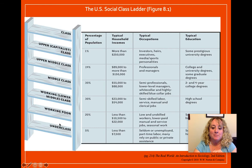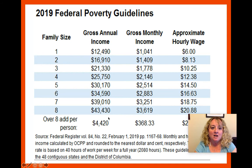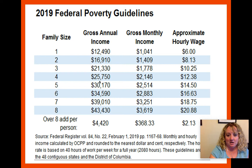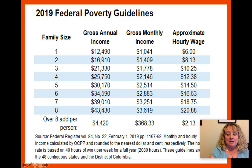I want to talk about the bottom part of the ladder — the working poor and the underclass. These are the 2019 federal poverty guidelines, basically how the federal government decides if you are living in poverty. Looking at a family of four, this chart says a family of four should be able to live on $25,000 a year. If you're at least at that, you're not considered poor. I would have a hard time raising myself on $25,000 a year, let alone myself and three other people. That works out to about $2,000 a month or about $12 an hour — not a lot of money for four people.